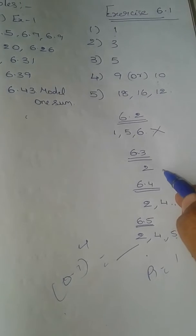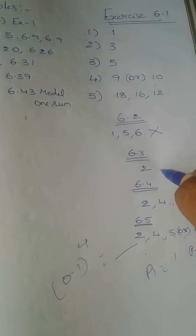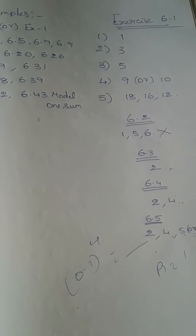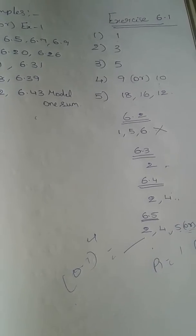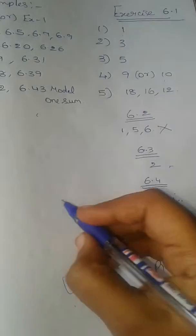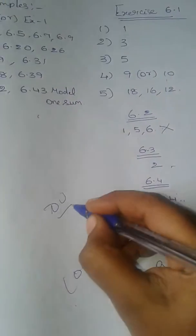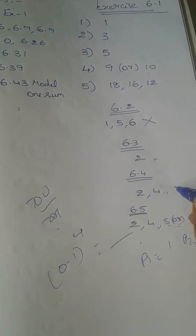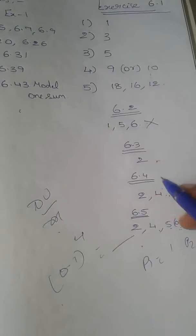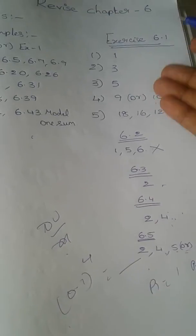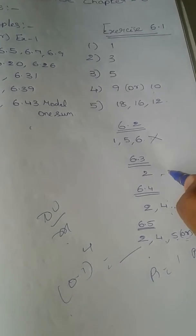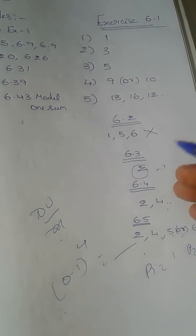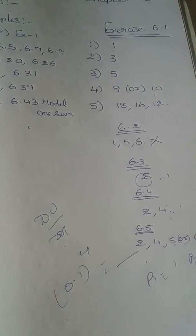If you look at section 6.3, you can see it in full. If you look at 6.3 or 6.4, you can see du/dx — du by dx — it's better. If you look at 6.3, you can see 2.3.